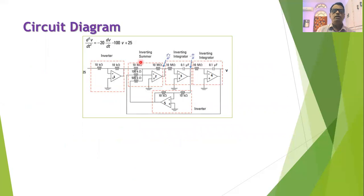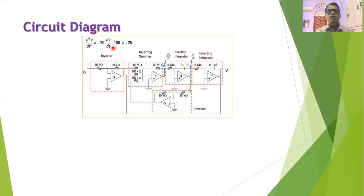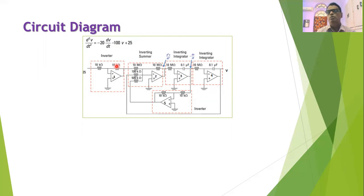In the first step we rearrange this equation so that the highest derivative d²V/dt² is on the left-hand side and all other terms are on the right-hand side. The equation becomes: d²V/dt² = −20 dV/dt − 100V + 25. We can then build the electronic circuit using five operational amplifiers connected as shown in the figure.